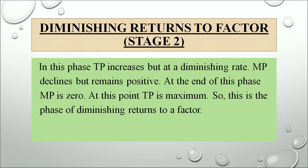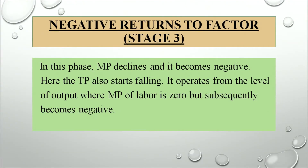The second stage, known as diminishing returns to a factor: in this stage, TP increases but at a diminishing rate, and MP declines but remains positive. At the end of this phase, MP becomes 0 and at this point TP will be at its maximum point. The third stage is negative returns to a factor. In this stage, marginal product becomes negative — MP declines and becomes negative. TP also starts falling. It operates from the level of output where MP of labour is 0 and subsequently becomes negative.